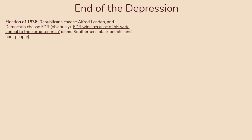Let's talk about what happens at the end of the depression, starting with the election of 1936. Republicans chose Alfred Landon and Democrats chose FDR. He was doing well as president at the time, was a relatively bipartisan leader, and there hadn't been anything controversial about his presidency. FDR ended up winning because he had wide appeal to the Forgotten Man — including some southerners, Black people, and poor people.